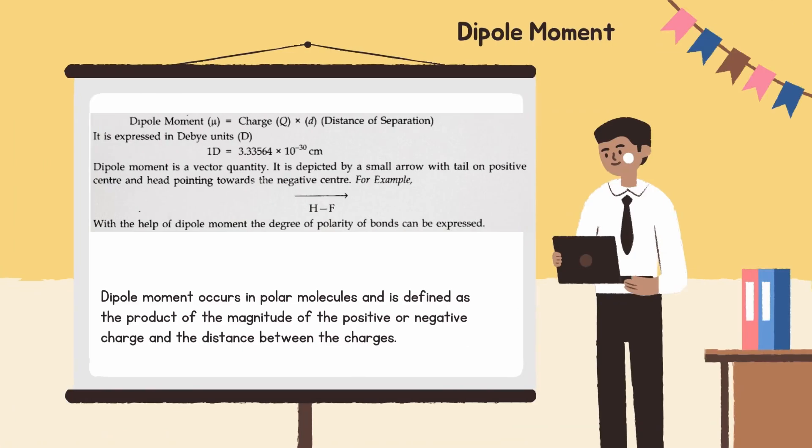Next one is dipole moment. Dipole moment occurs in polar molecules and is defined as the product of the magnitude of the positive or negative charge and the distance between the charges where dipole moment mu equals charge q times distance d of separation.